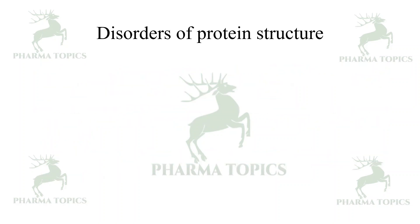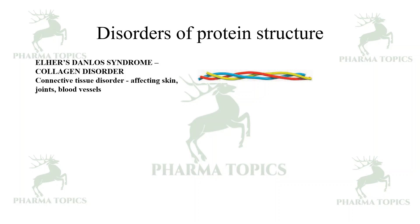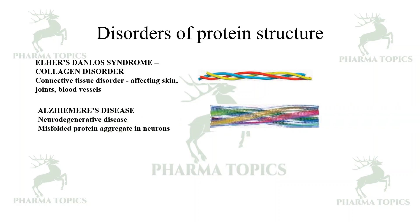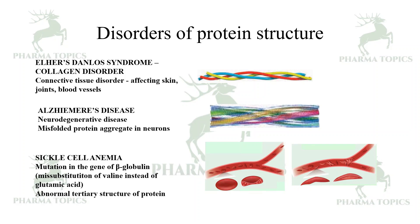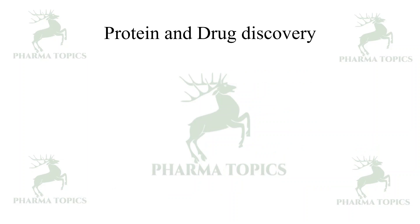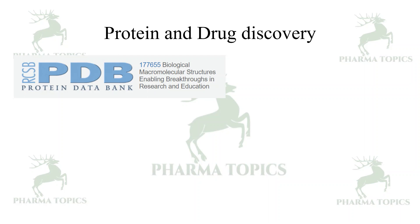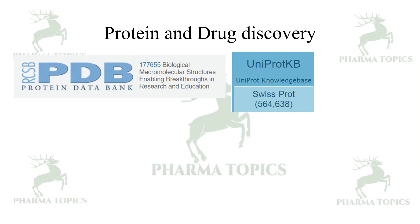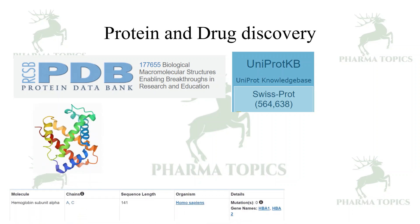Disorders related to protein structure include: Ehlers-Danlos syndrome, a collagen disorder affecting skin, joints, and blood vessels; Alzheimer's disease, a neurodegenerative disease caused by misfolded protein aggregates in neurons; and sickle cell anemia, caused by a mutation in the beta-globin gene resulting in an abnormal tertiary structure causing hemolysis. These proteins are relevant to drug discovery and can be studied through databases like the Protein Data Bank (PDB), UniProt, and Swiss-Prot, which contain structures determined by X-ray crystallography or NMR.